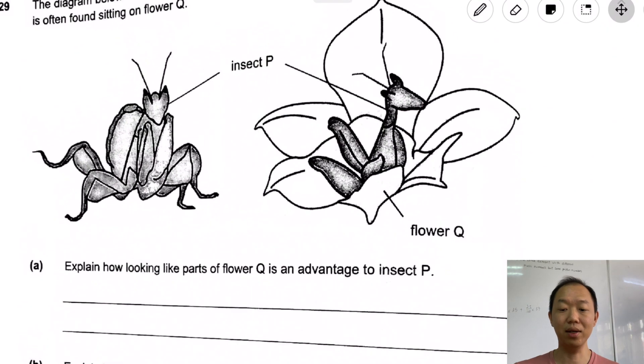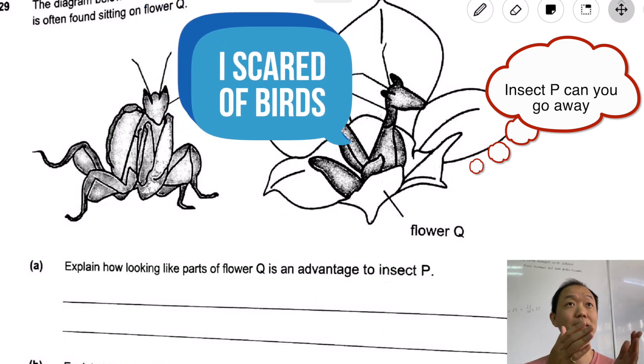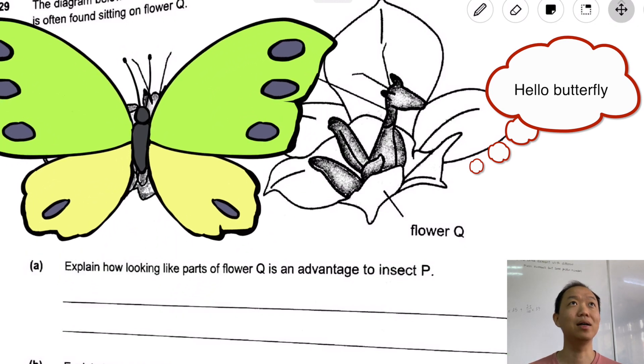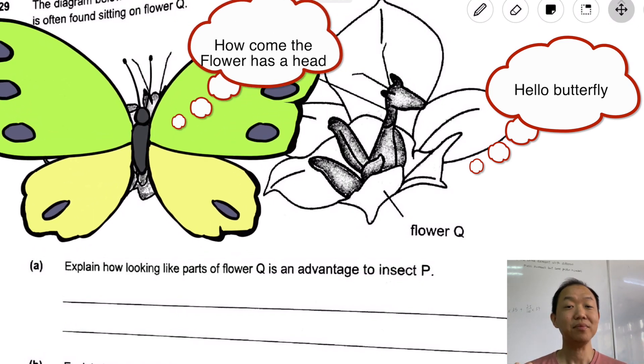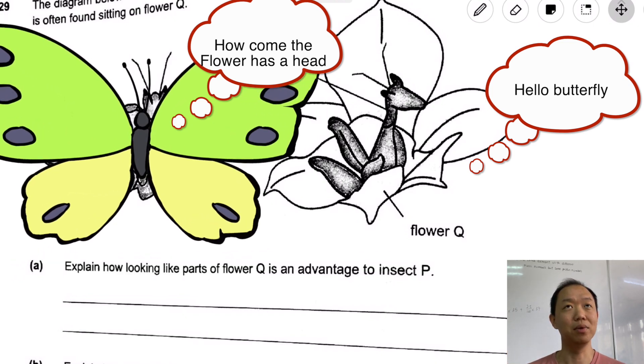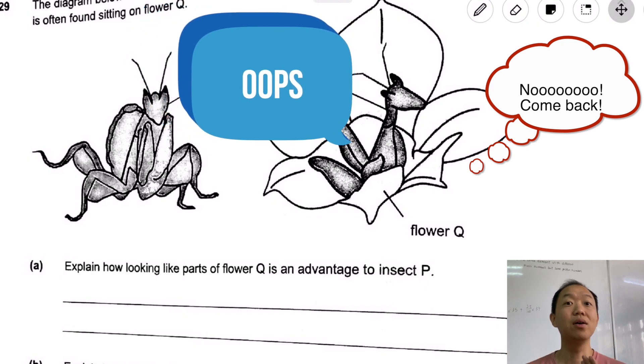Explain how insect pea sitting on flower cube is a disadvantage to flower cube. Flowers need insects to come and pollinate, right? So if the insect doesn't come to pollinate the flower, the flower will not be able to reproduce because we need the pollen grains to travel from one flower to another. Now imagine there is this insect pea over there - every time a bee comes by or a butterfly comes by, instead of getting a flower, it gets an insect pea. It's going to scare the butterfly away. The flower cube will not be able to pollinate and therefore cannot reproduce.